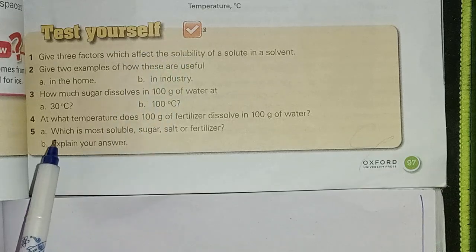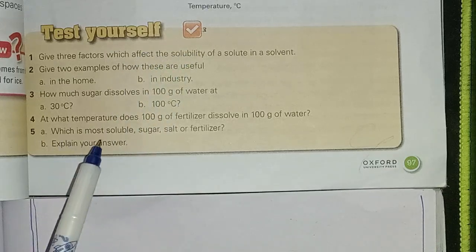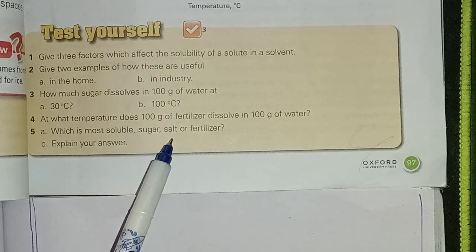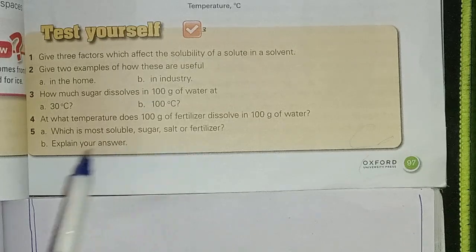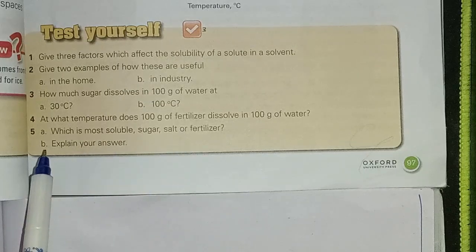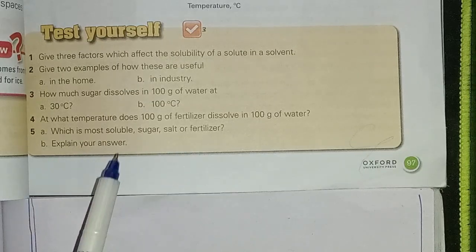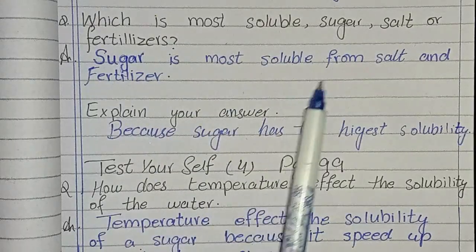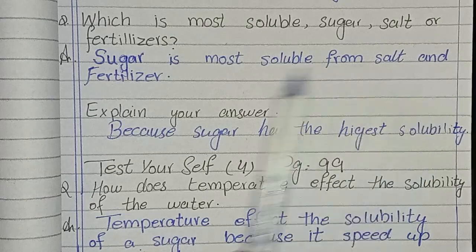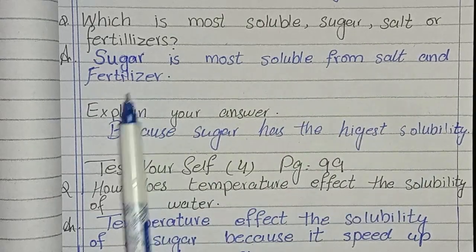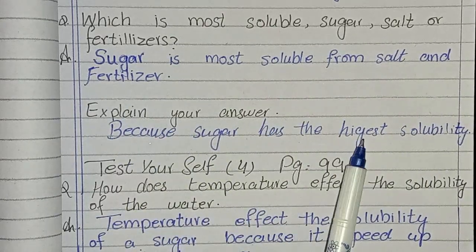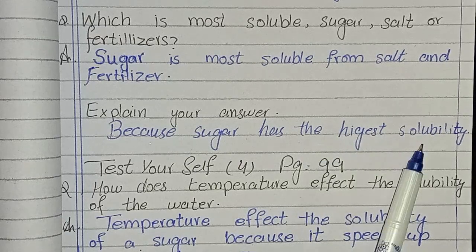Third Test Yourself last question: which is most soluble — sugar, salt, or fertilizer? Explain your answer. Sugar is most soluble from salt and fertilizer, because sugar has the highest solubility.